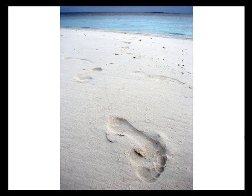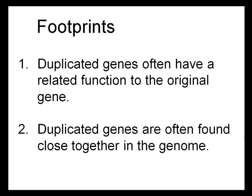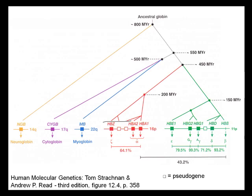Earlier I mentioned finding characteristic footprints within the genomes of various organisms that can tell us gene duplication has taken place. The process of gene duplication leaves behind two distinctive marks: first, duplicated genes often have a related function to the original gene; and second, duplicated genes are often found close together in the genome. Do we really find these characteristics? The answer is yes, and the perfect example is the globin superfamily.